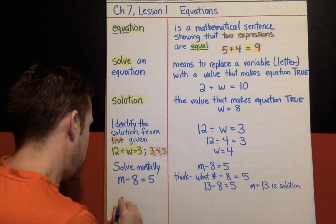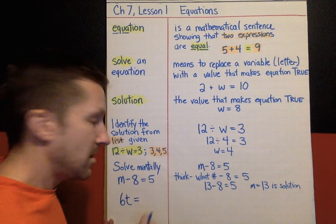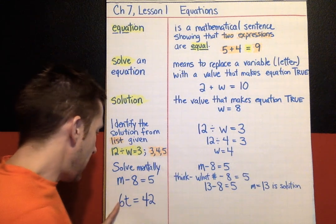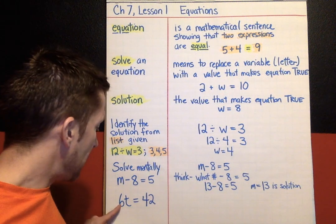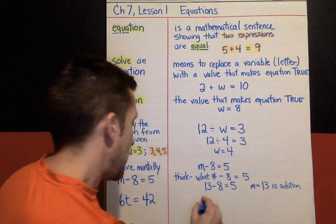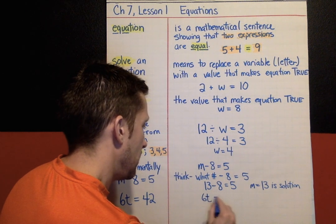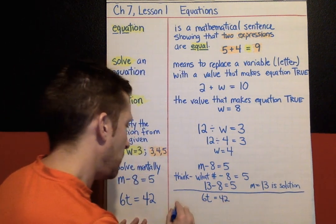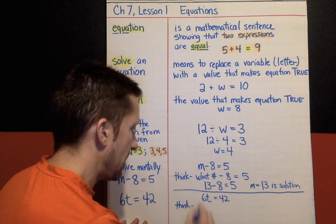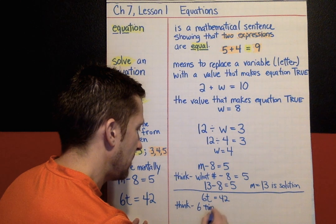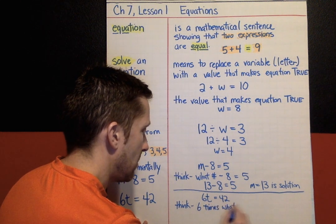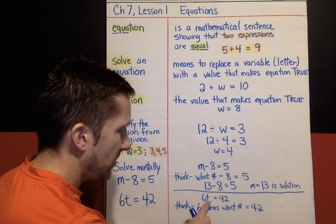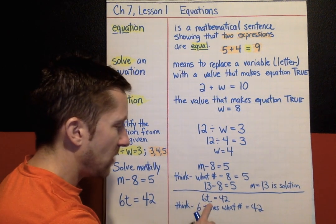One more example, and then you're off working. We're doing 6t equals 42. In order to solve this, you have to remember that a number right next to a variable means that they're being multiplied. This means 6 times t equals 42. I'm going to write it down. 6t equals 42. Solving these mentally, this is what I'm thinking. 6 times what number equals 42? That's my thinking to solve this. You can look at your multiplication table, or if you're good with your math facts, you know the answer.